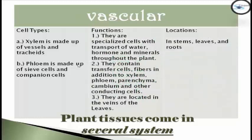The three major functions of the vascular system: they are specialized cells for the transport of water, hormones, and minerals throughout the plant. Second, they contain transfer cells, fibers, in addition to xylem, phloem, parenchyma, cambium, and other conducting cells. And last, they are located in the veins of the leaves. The location of the vascular system is in the stems, leaves, and roots.